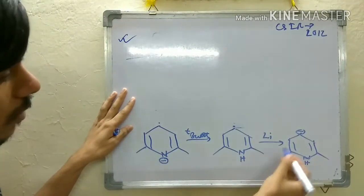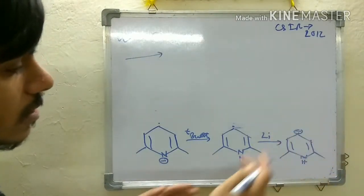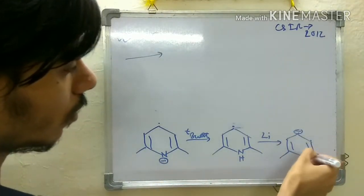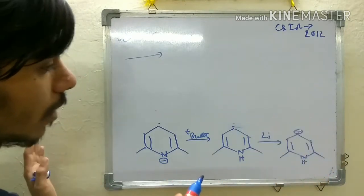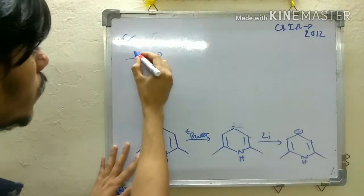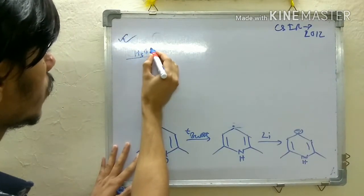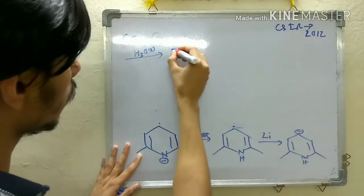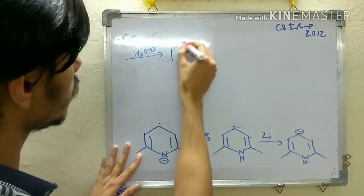This is stable in your tert-butanol medium - it won't be protonated. But when you treat it with H3O+, then this center will also be protonated. That's the second condition, and you get this.